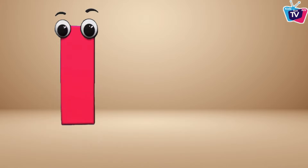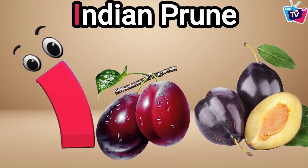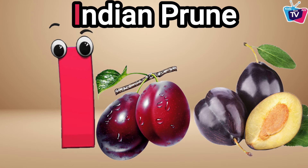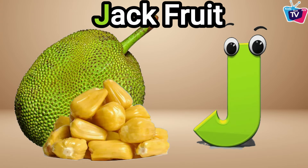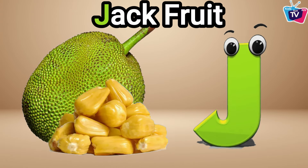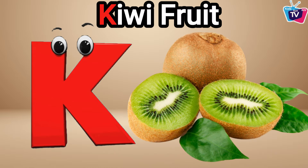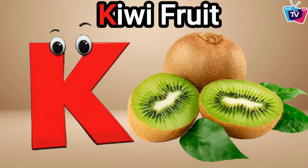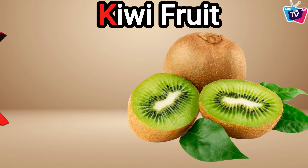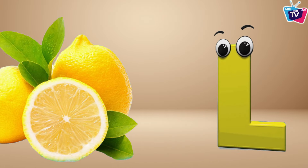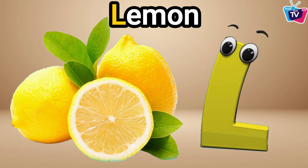I is for Indian prune, i-i-Indian prune. J is for jackfruit, j-j-jackfruit. K is for kiwifruit, k-k-kiwifruit. L is for lemon, l-l-lemon.